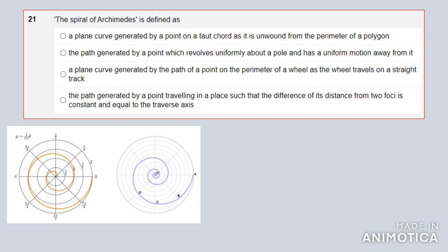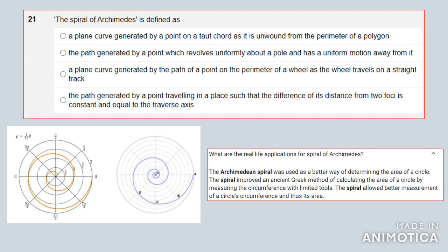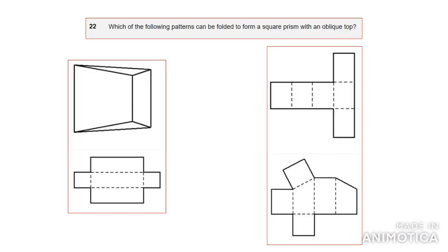That is what you call the spiral of Archimedes. You might ask what is it used for — it was used way back in the day as a better way of determining the area of circles. When you had limited tools, you had to find different ways to find areas of circles, so the spiral of Archimedes was one way to determine that. The answer is B.